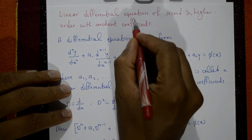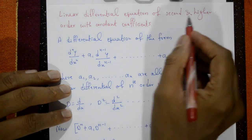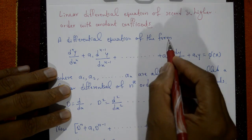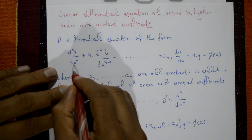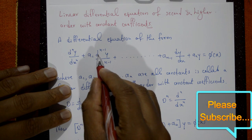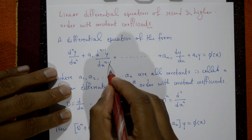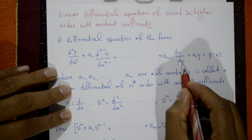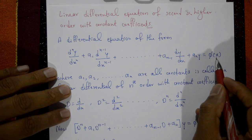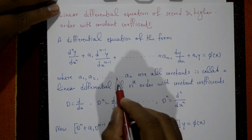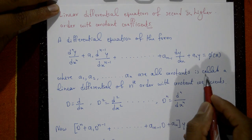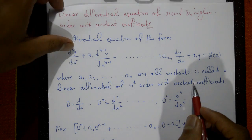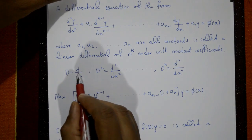A linear differential equation of second and higher order with constant coefficients has the form: d^n y/dx^n plus a1 times d^(n-1)y/dx^(n-1) plus further terms plus a(n-1) dy/dx plus a_n y equals phi of x, where a1, a2, and so on through a_n are all constants. This is called a linear differential equation of nth order with constant coefficients.